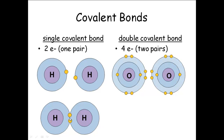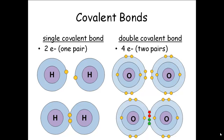Oxygen has six electrons in the outer shell and wants eight. So it can hook up with another oxygen atom and each one shares two electrons with the other. We have a total of four electrons being shared — two pairs — and that is a double covalent bond. You'll see it written with two lines. Double covalent bonds are even stronger than single covalent bonds, and any covalent bond is stronger than an ionic bond.